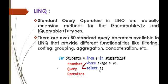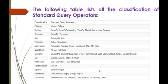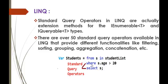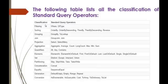The standard operators used in that example are 'where', 'select', and so on. The following table lists all the classifications of Standard Query Operators. For example, in the previous example we used 'where' and 'select' — 'where' comes under the filtering type classification.